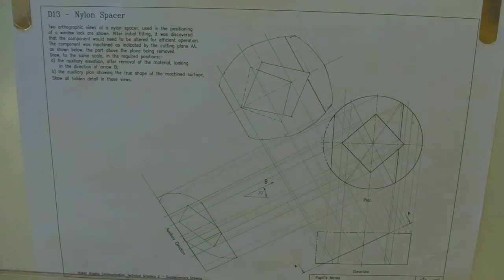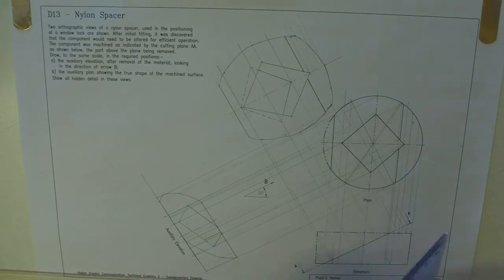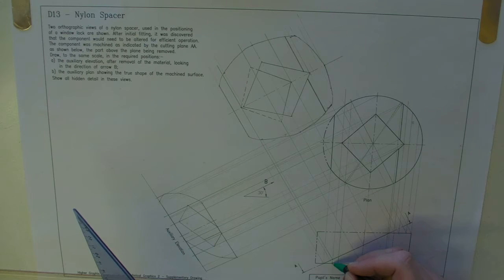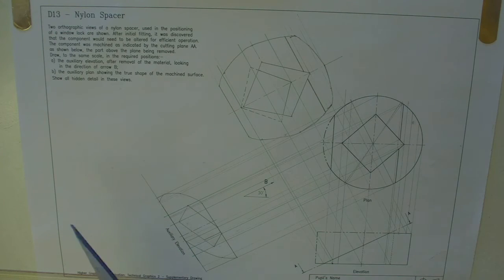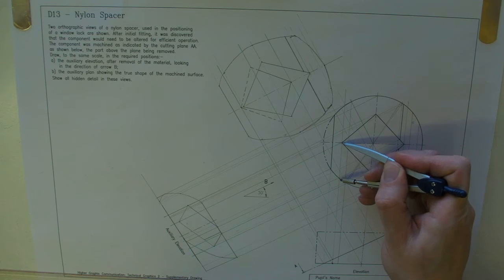Now we're not quite done because there is the lower edges as well, which we'll see a bit of. So what we're going to do here is, down at this point here, we're going to measure, again, the distance from the center line out to the curve.